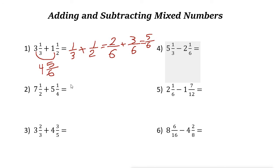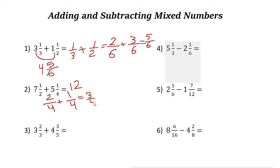Next example: seven and one-half plus five and one-fourth. Adding the whole numbers, seven plus five is twelve. Now one-half plus one-fourth — these don't share a common denominator. The common denominator is four. One-half becomes two over four. Two over four plus one-fourth is three over four. The final answer is twelve and three-fourths.